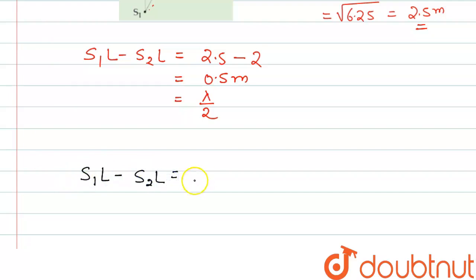L equals lambda. Why lambda? Because when the path difference equals lambda, the intensity will be maximum.